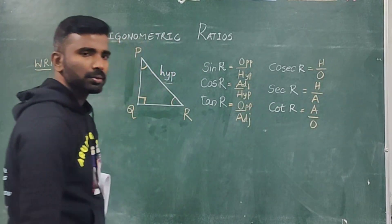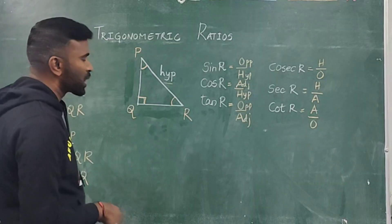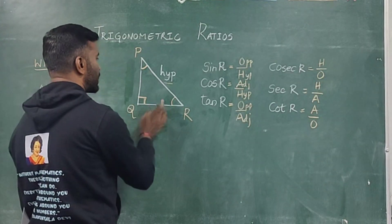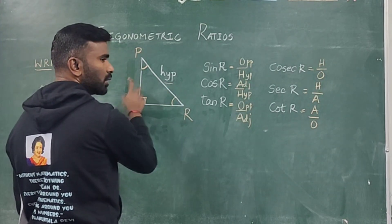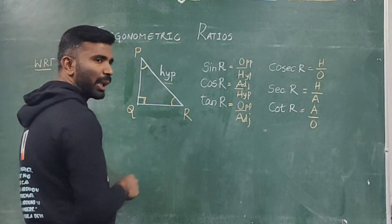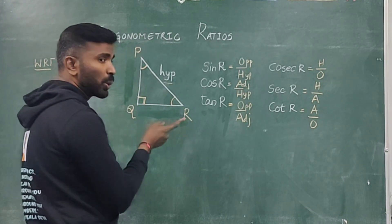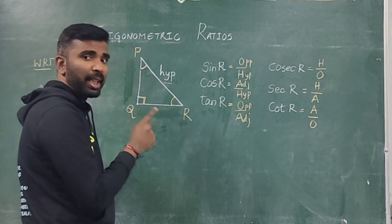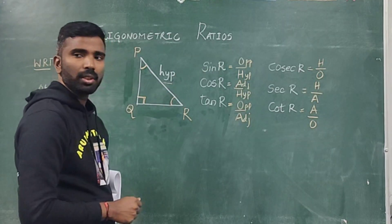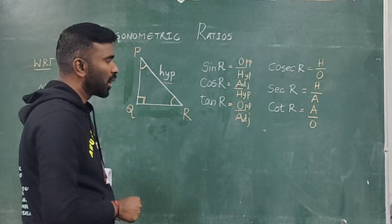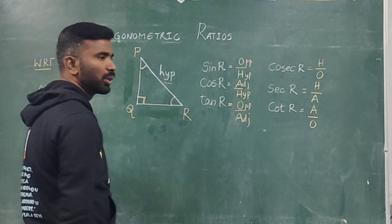In the examination they will give values such as 12 and 5. You should write the ratios with respect to whichever acute angle they ask about. For example, if they give a triangle with sides 10, 8, and 6 — note that 10² = 8² + 6², confirming by Pythagoras theorem that the right angle is correctly placed.